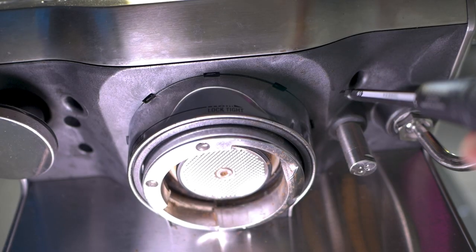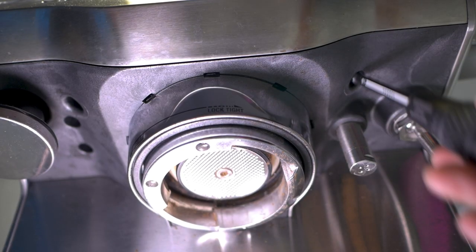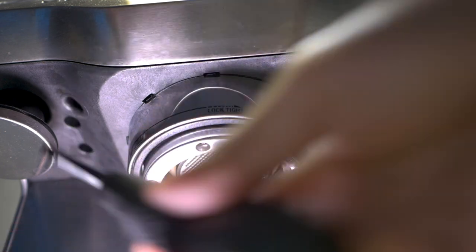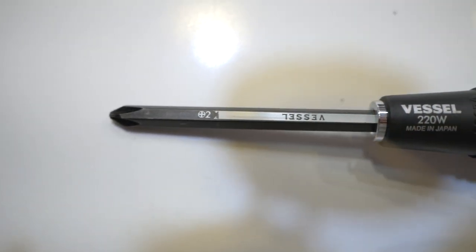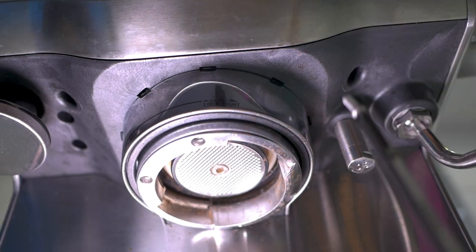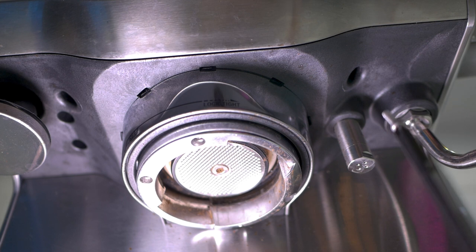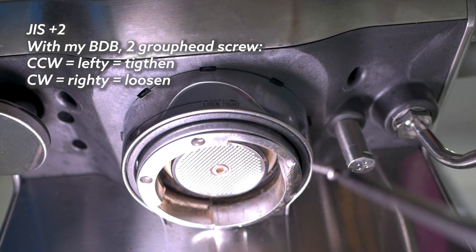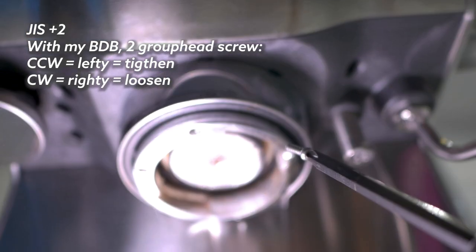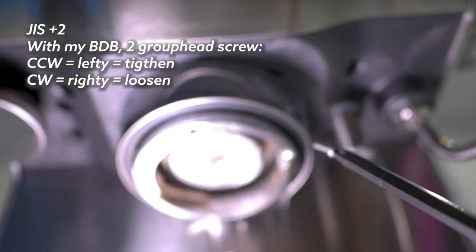You have two screws that are right next to the group head. That's here and here. I'm not sure why, but righty tighty lefty loosey does not apply here. To loosen it, you go clockwise. To tighten it, you go counterclockwise. But essentially, you'll get two of these out on each side of the group head. Put them aside and don't lose them.